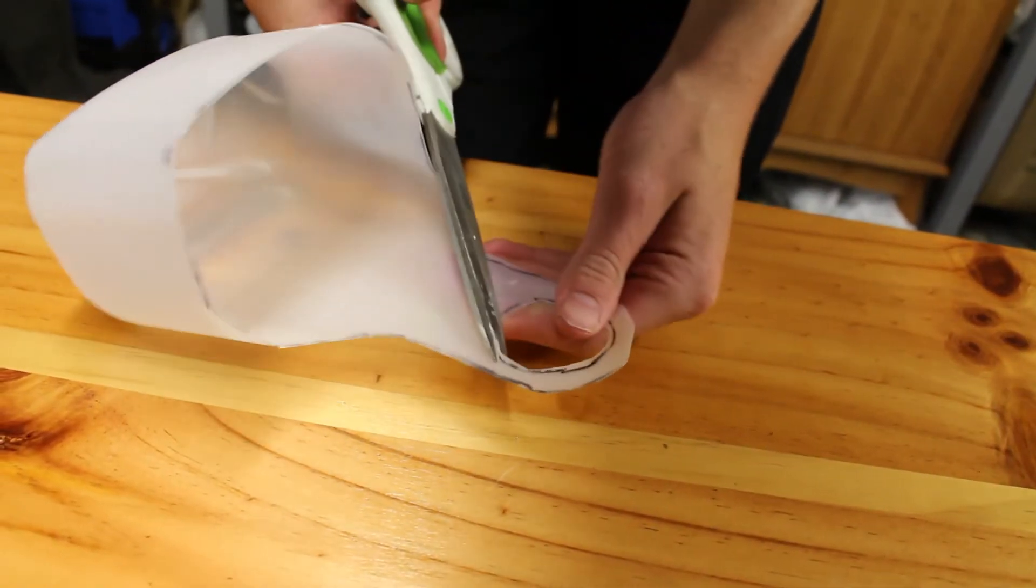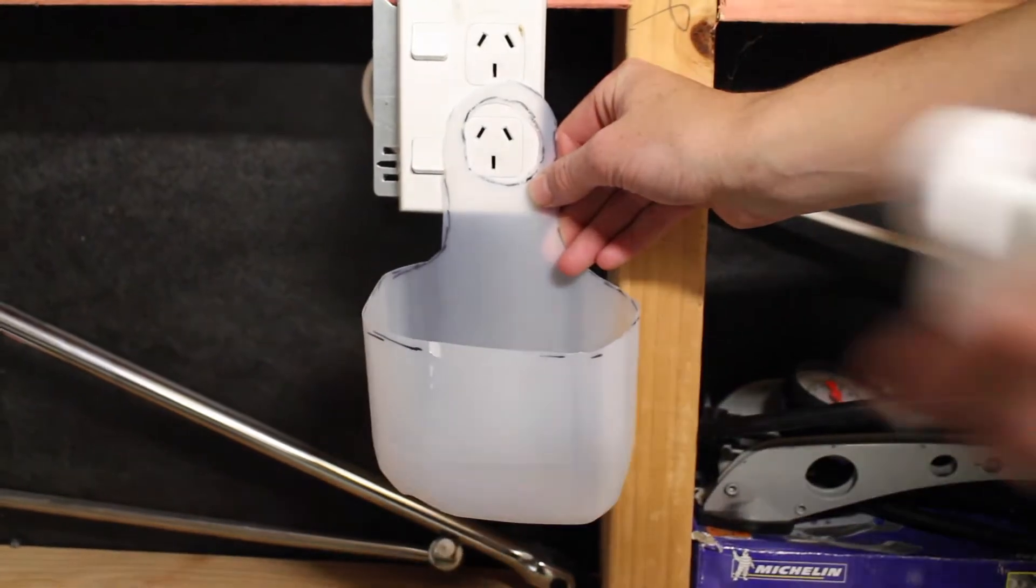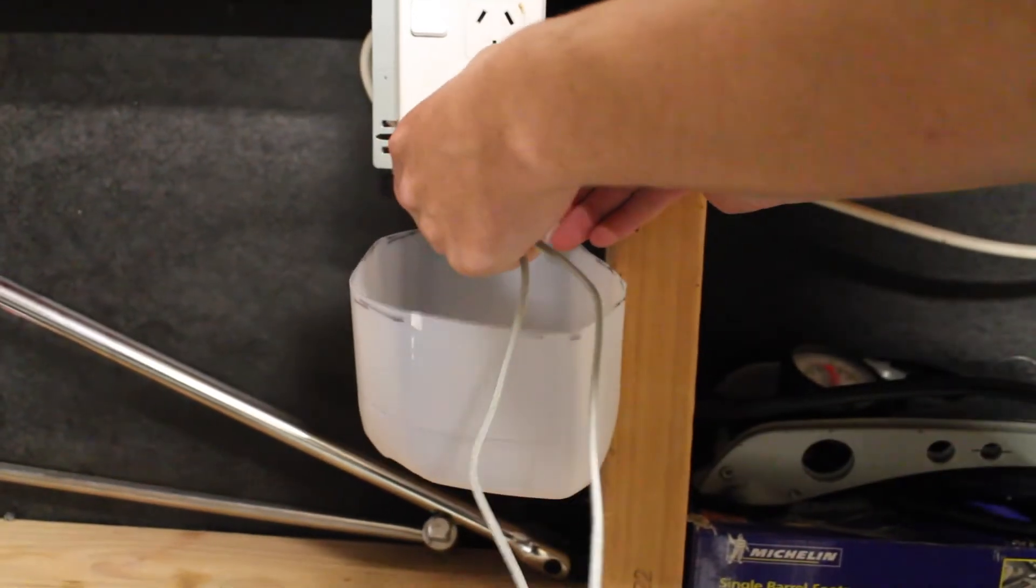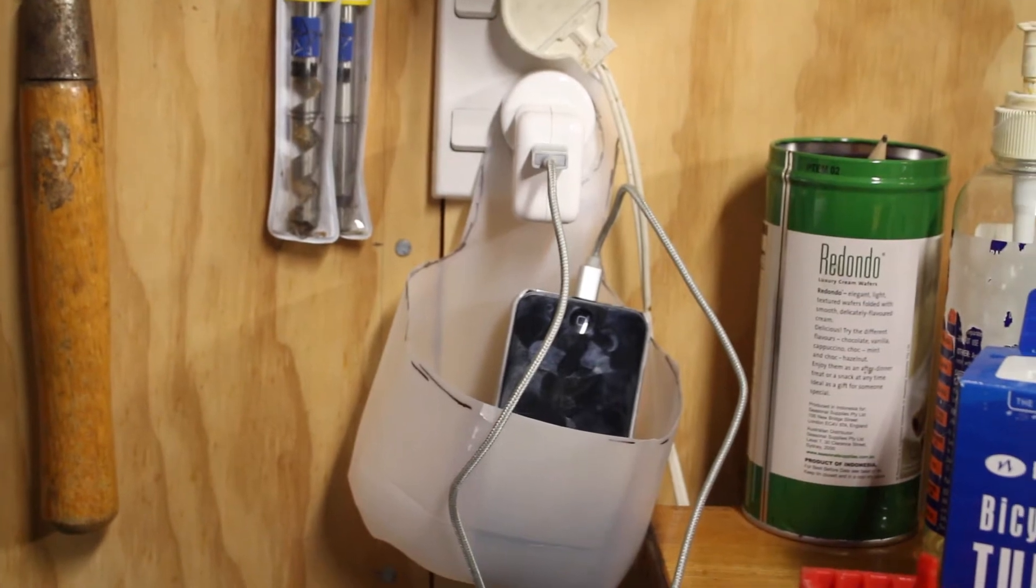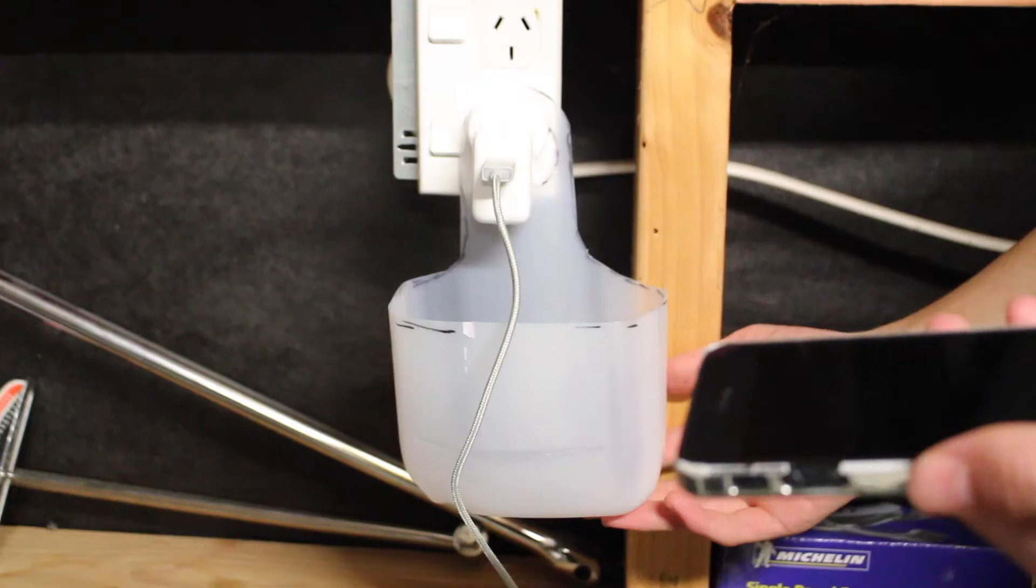Alright guys, so that's pretty much it. Now I'm just putting it into the wall and you plug in your phone charger like that, put your phone into the charger, and then it can sit nice and snug and you won't have any loose cords dangling down.